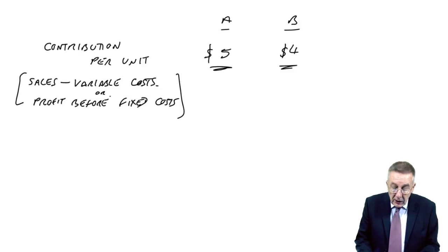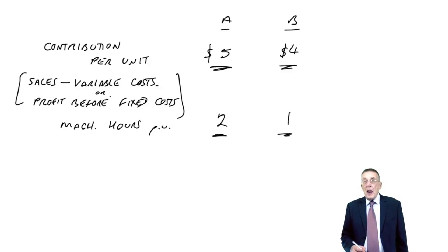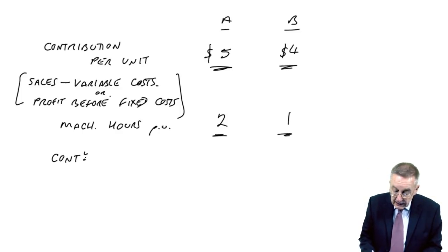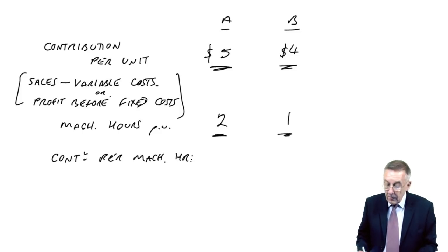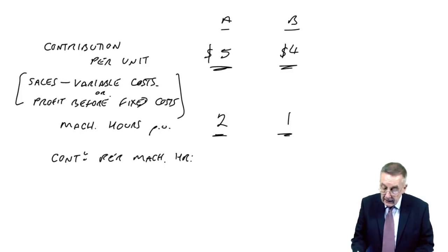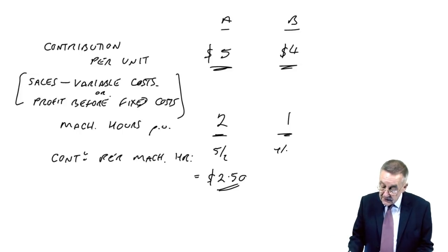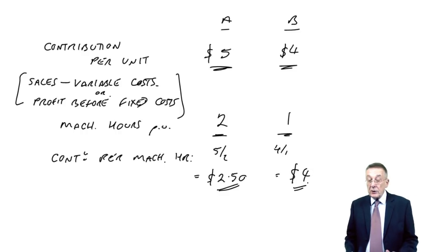A is two, B is one. And to see what the better use of these hours is, we look at the contribution per machine hour. It takes two hours to make an A and earn five dollars, so for every hour we use making A, it generates $2.50. Whereas B, one hour to generate four dollars. Every hour generates four dollars.